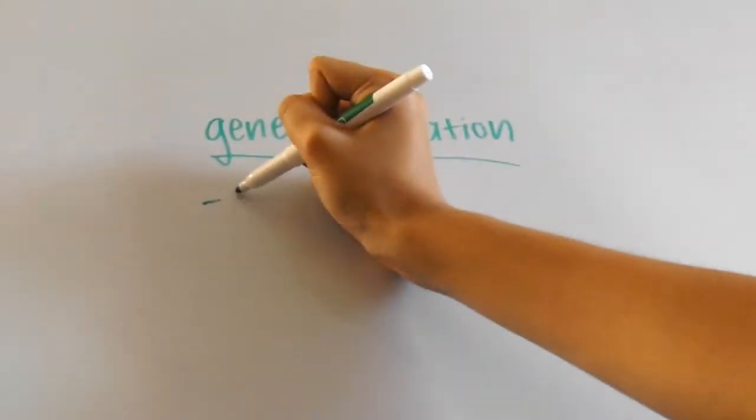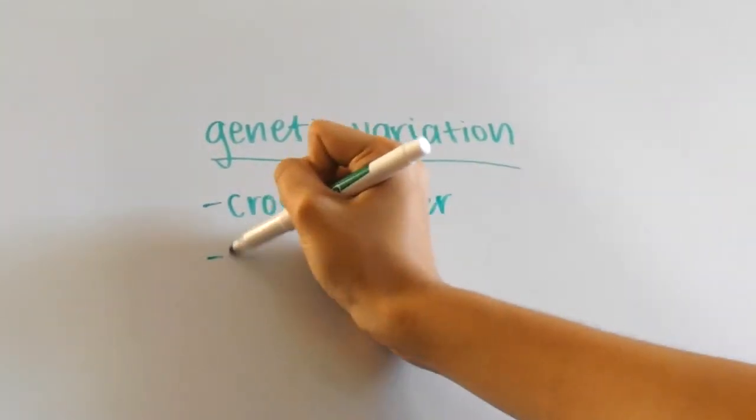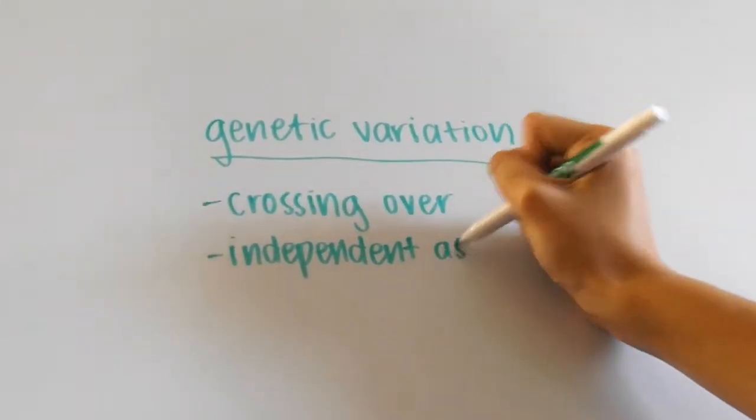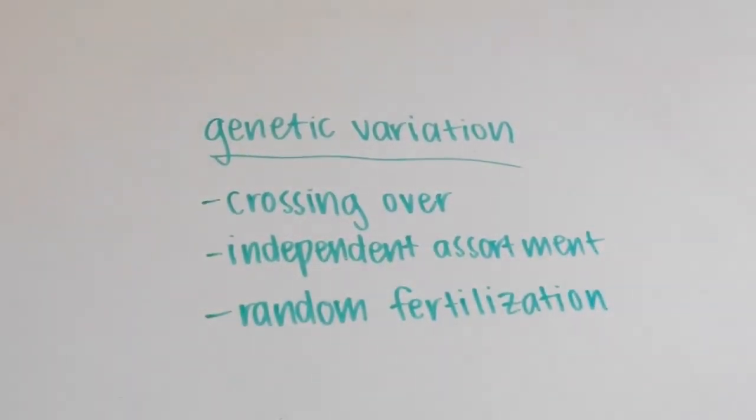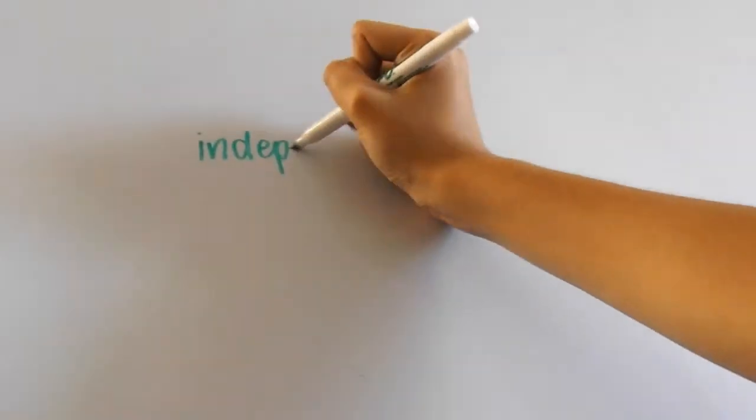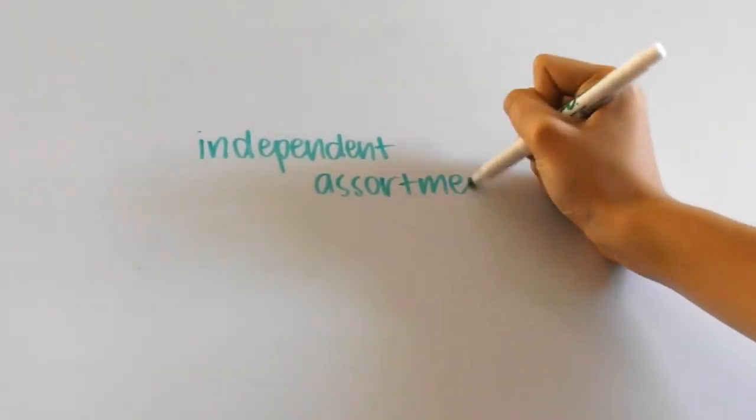Now we see that there are plenty of ways for genetic variation due to crossing over and two other mechanisms called independent assortment and random fertilization. Independent assortment refers to the fact that tetrads can line up at the metaphase plate independently and randomly.